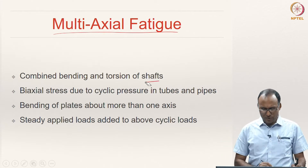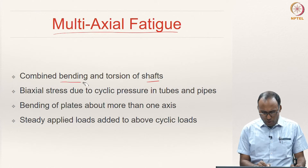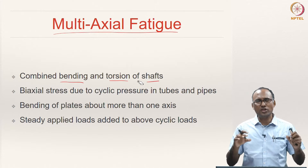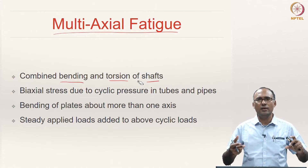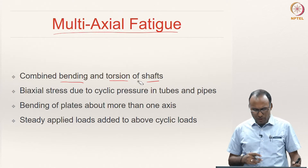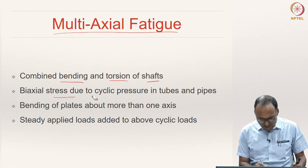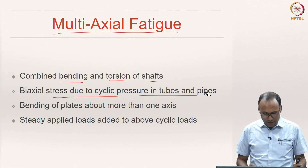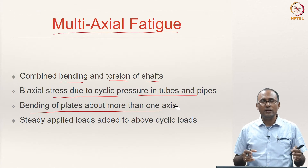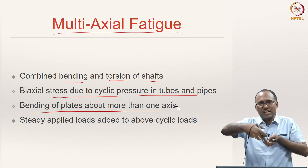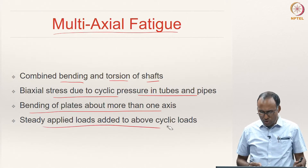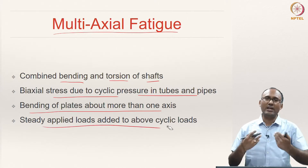Typically most shafts when we are designing are subjected to bending and torsion. Bending gives you normal stress, torsion gives you shear stresses. As a result you have a combined state of loading. Similarly, you will have biaxial stresses due to cyclic pressure in tubes and pipes, and bending of plates about more than one axis. You can have a plate bending about this axis and two transverse axes, and steady applied loads added to the above cyclic loads.